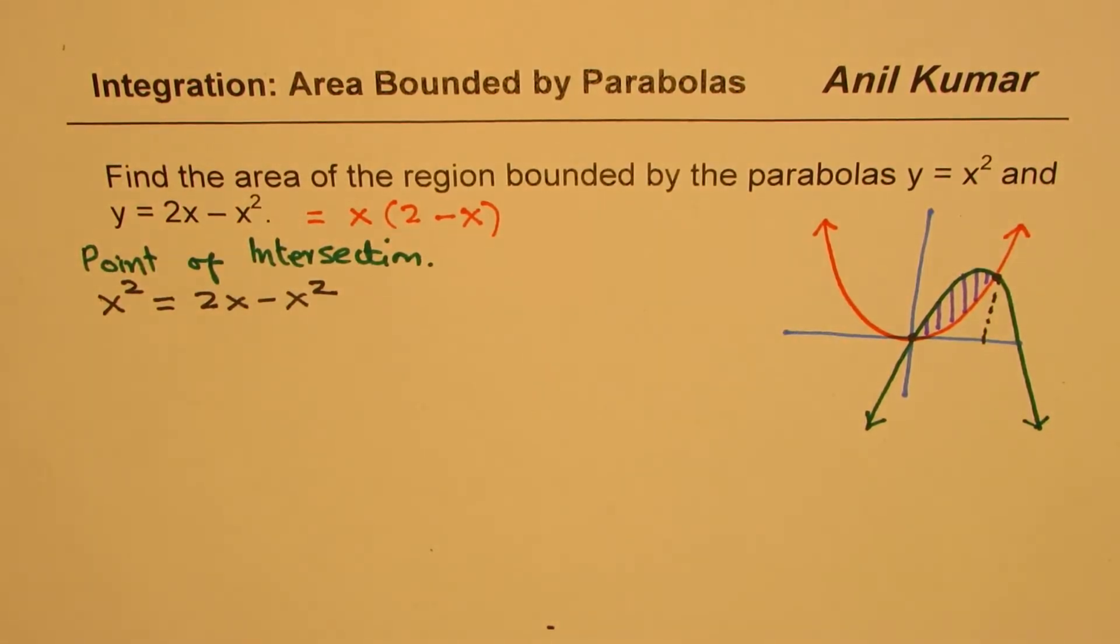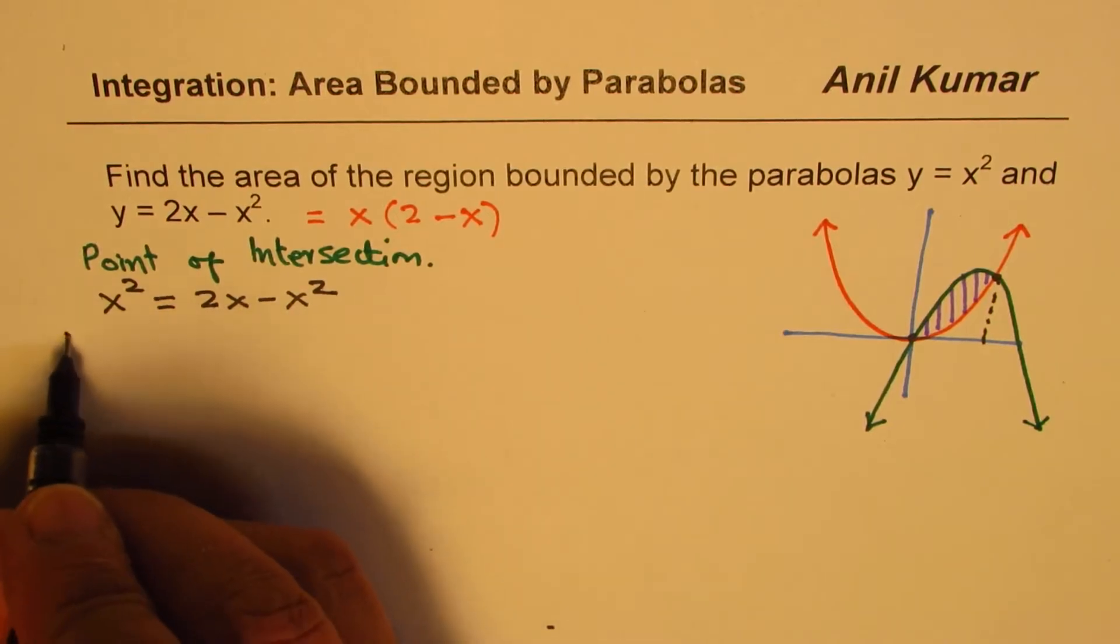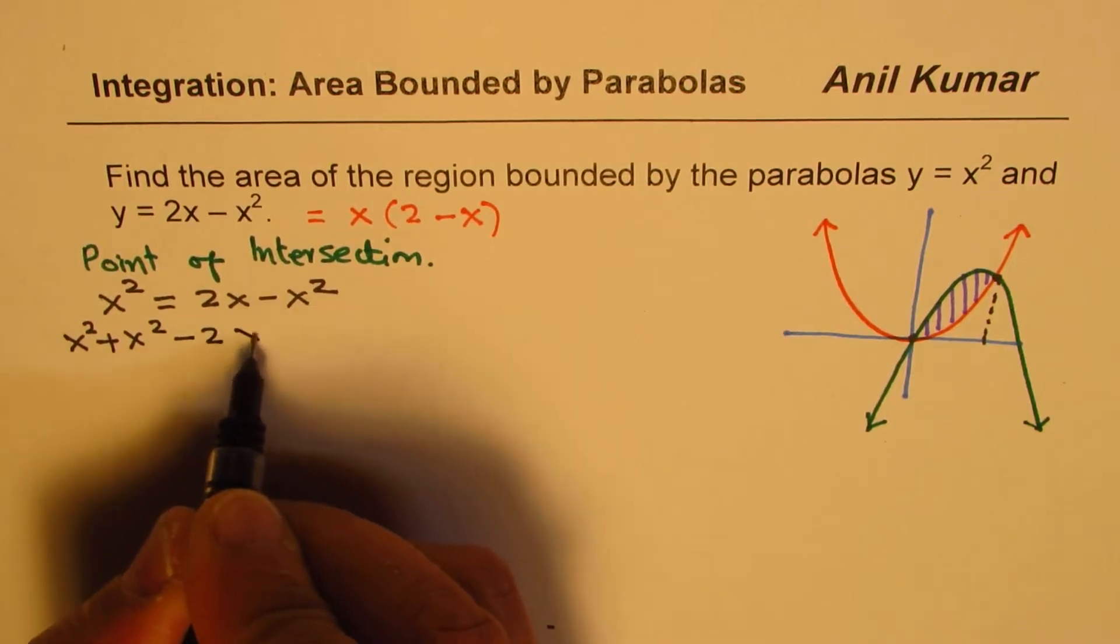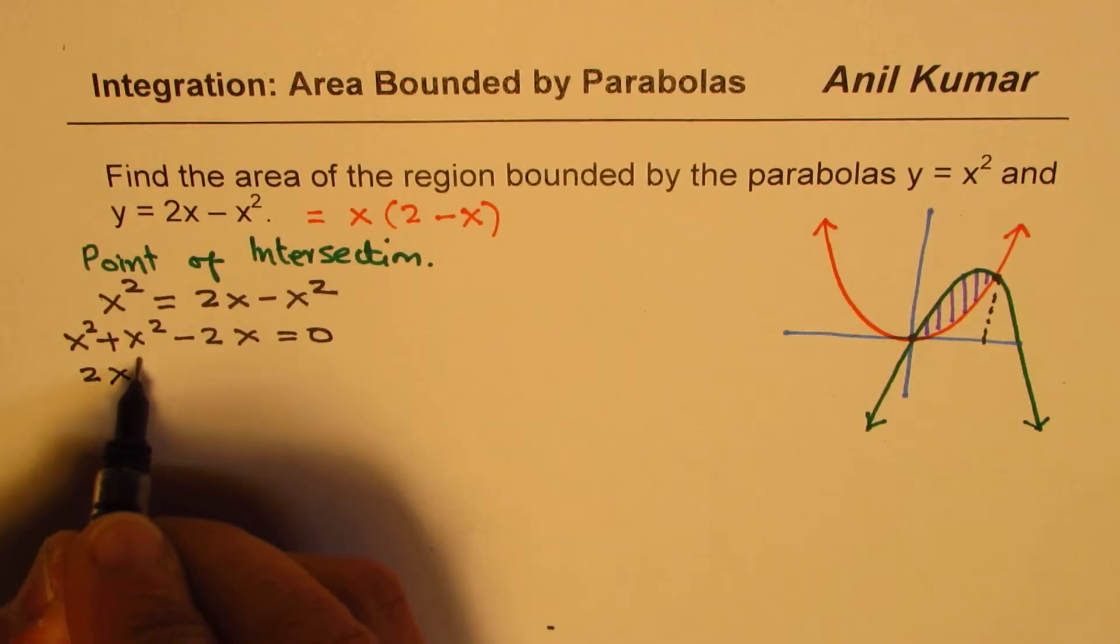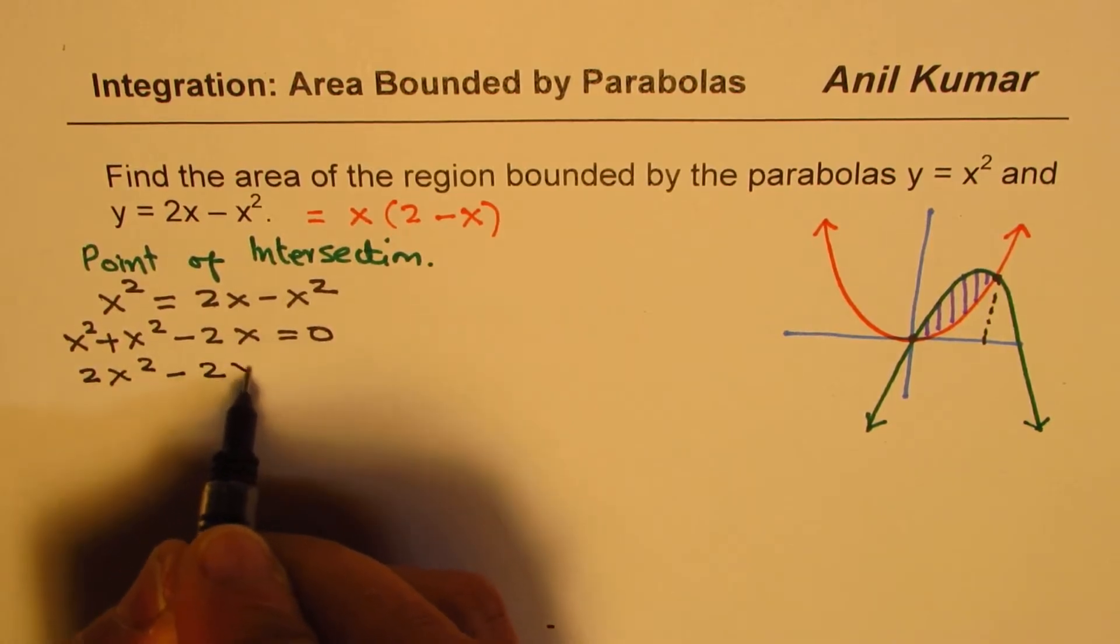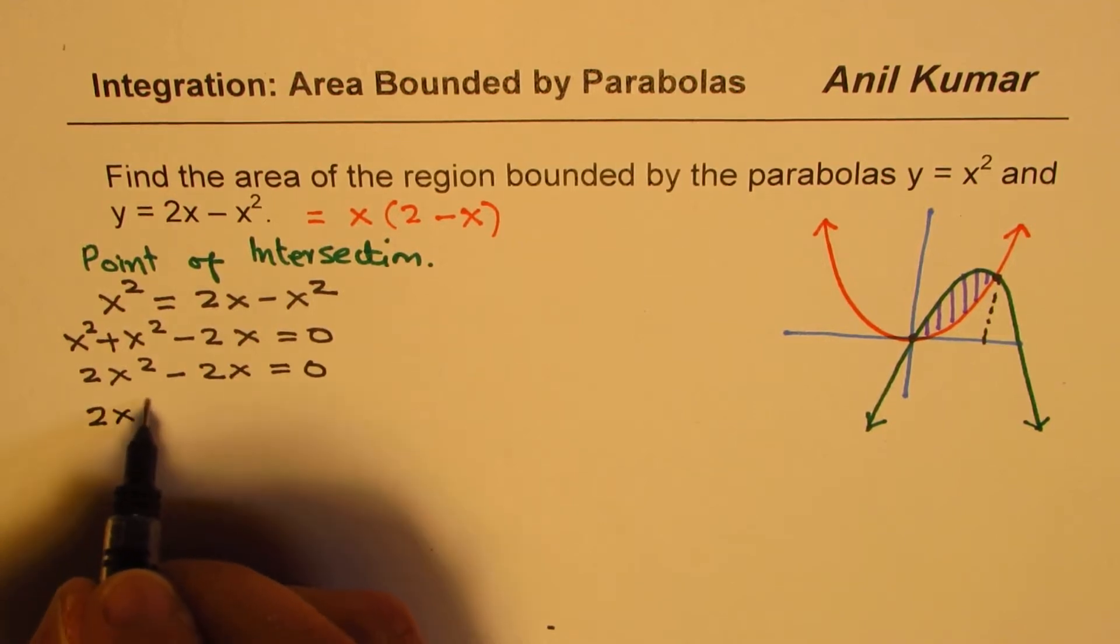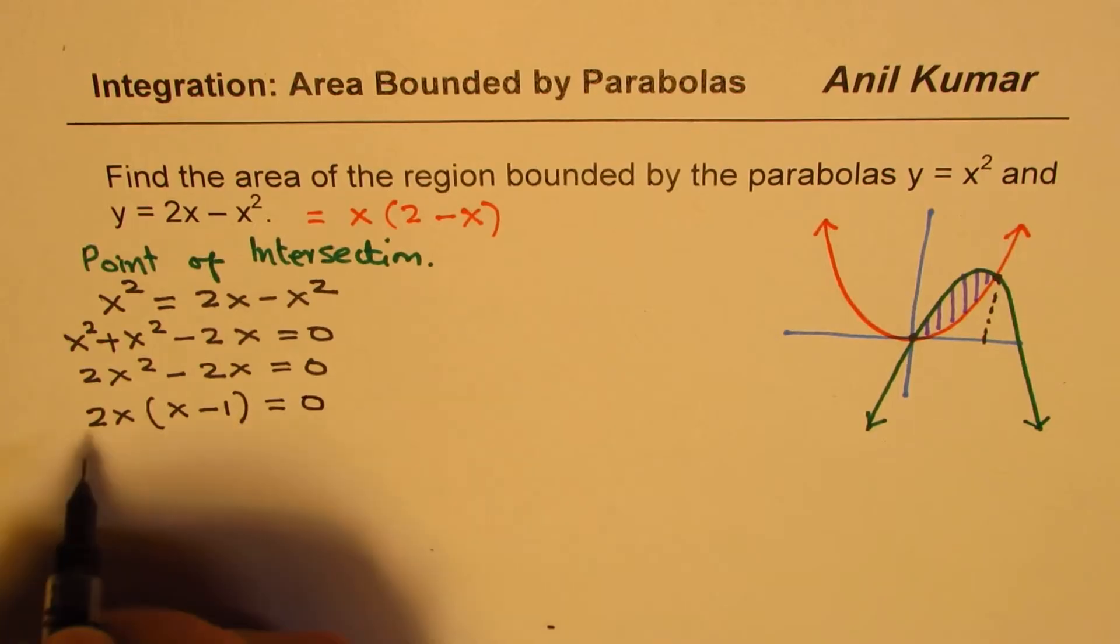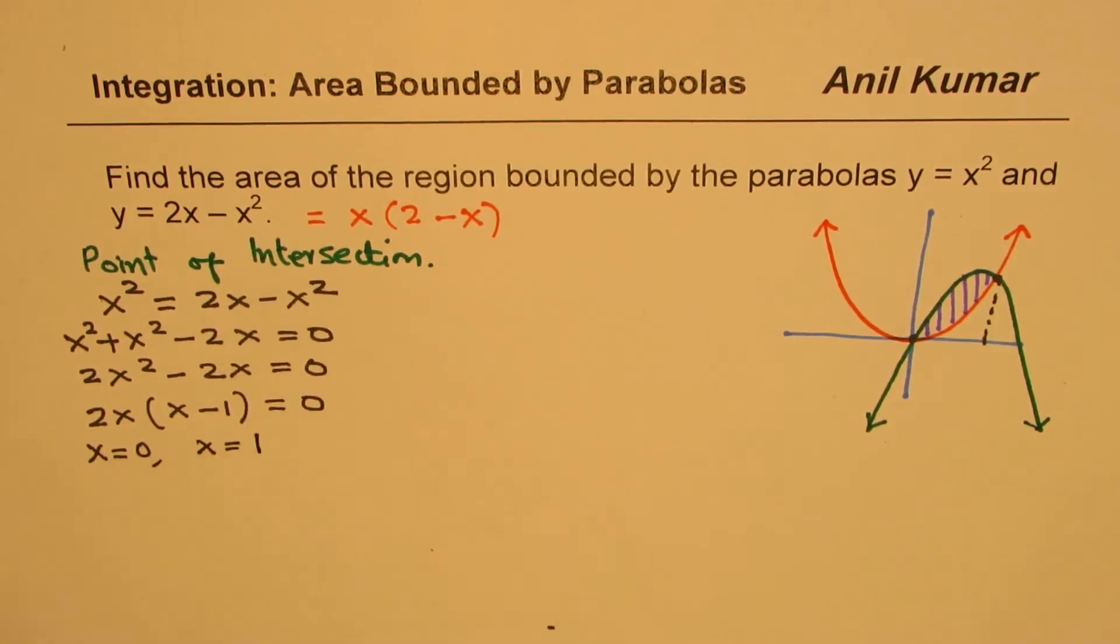Let's bring the terms, both of them, to one side and then solve. Bringing x squared here gives us x squared plus x squared minus 2x equals 0. This is 2x squared minus 2x equals 0. You can take 2x common, so we get x minus 1 equals 0. So one point of intersection is at x equals 0, the other one is at x equals 1.